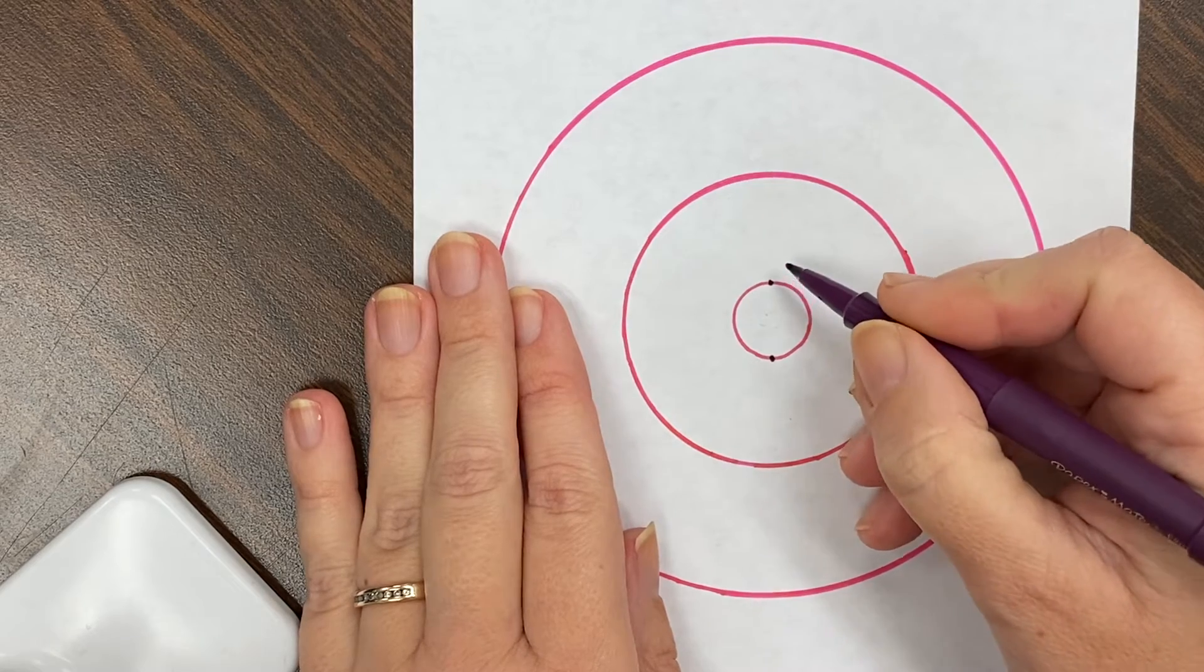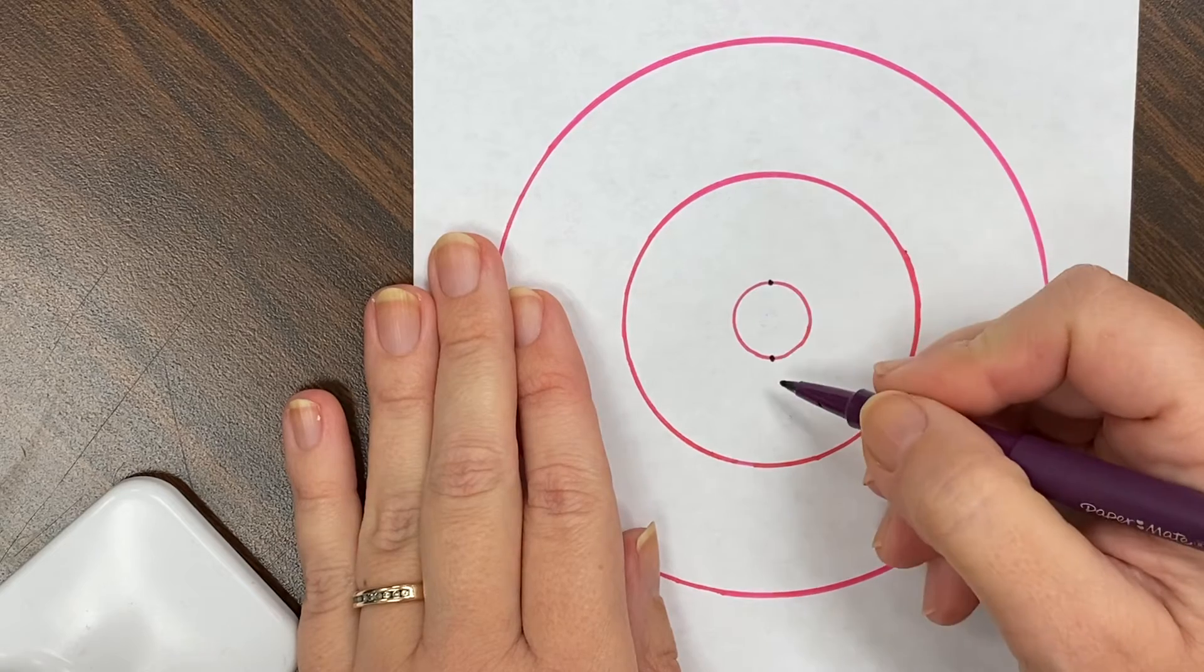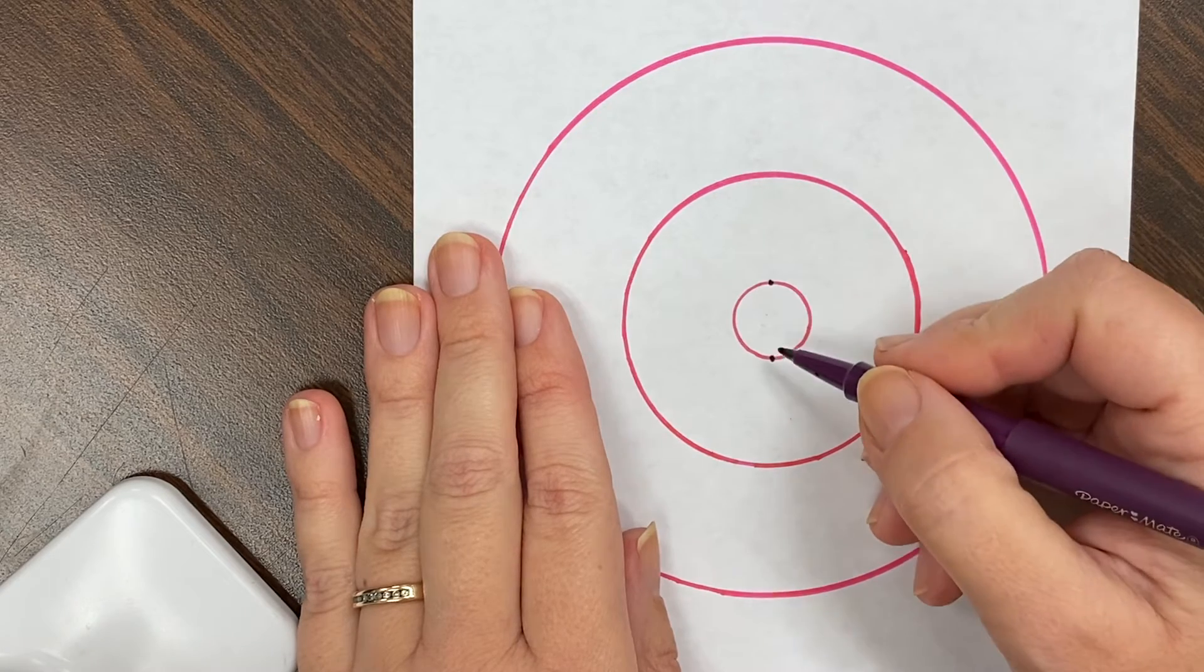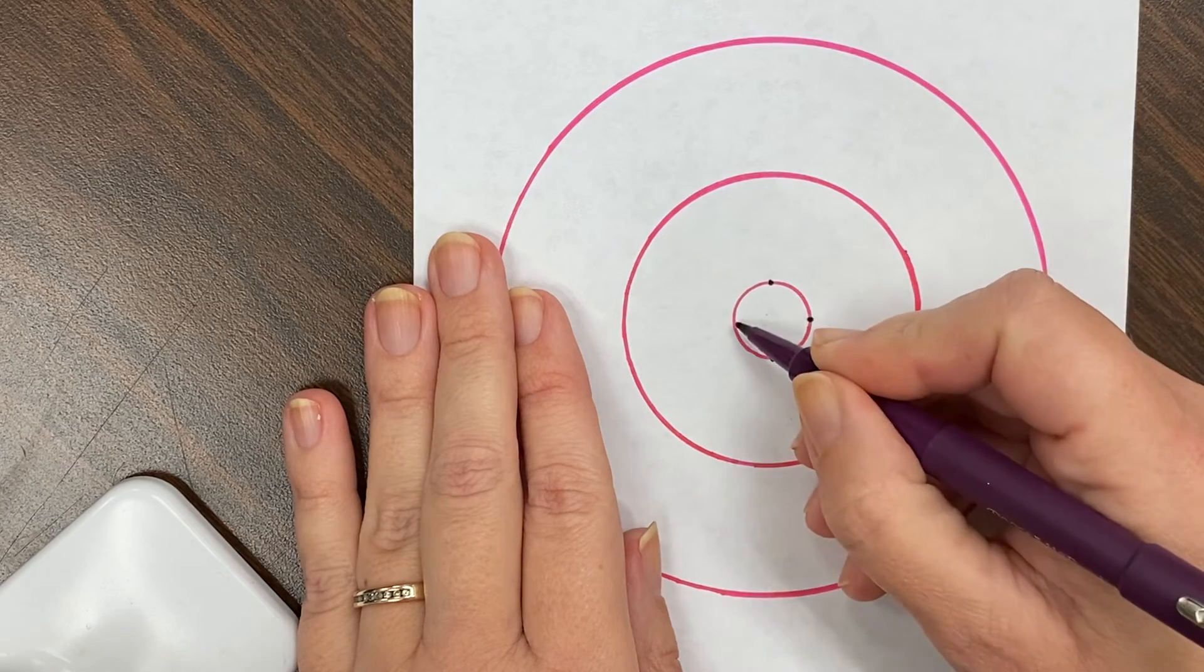We could call these 12 and 6 o'clock because on a clock, that's what those would be. We'd see those numbers there. I'm going to put one at 3 o'clock, at 9 o'clock.